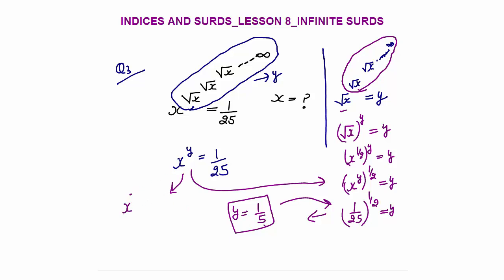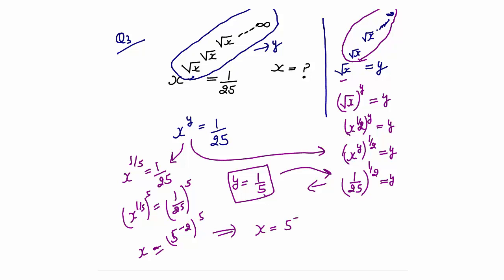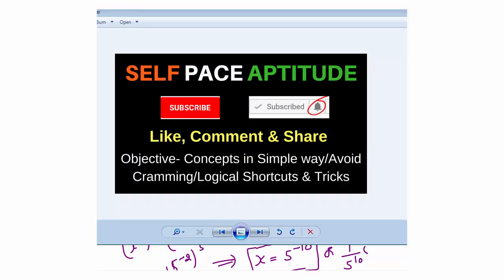Now substituting y = 1/5 back: x^(1/5) = 1/25. Raising both sides to the power 5: x = (1/25)^5. Since 1/25 = 5^(−2), we get x = 5^(−10), or x = 1/5^10. That is our final answer. Please share your comments on how much you understood. The objective of this channel is to make concepts understandable in the simplest way without memorizing formulas. Thank you.